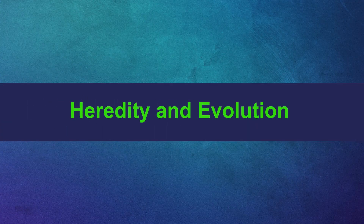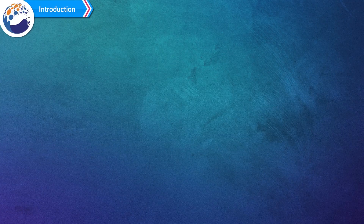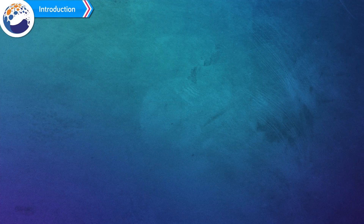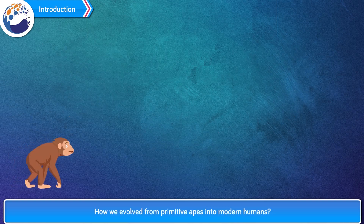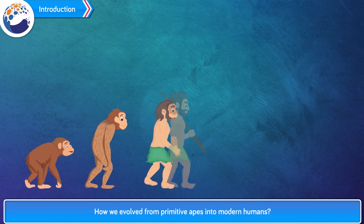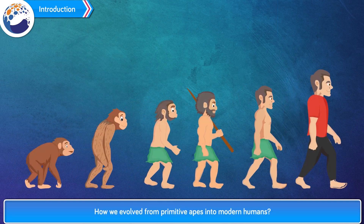Chapter 1: Heredity and Evolution. This chapter provides answers to questions such as: Why our face or features are similar to our father or mother? And how we evolved from primitive apes into modern humans?